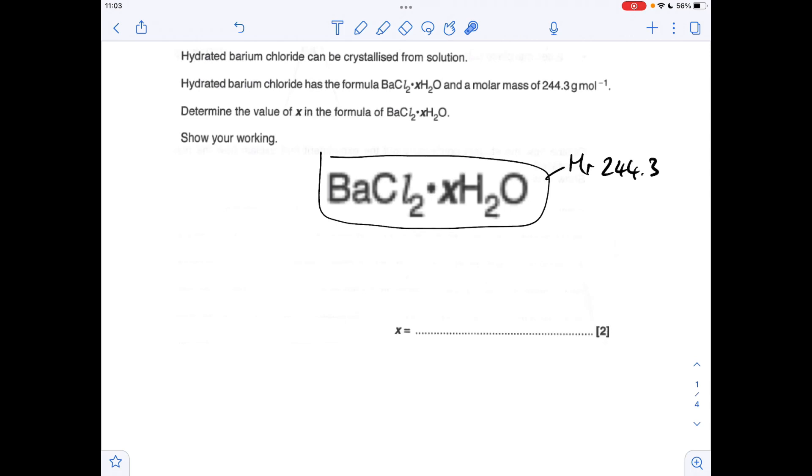And the next part, so we're told the MR of the hydrated barium chloride is 244.3. We've got to work out the value of X. Well, we do know this part of the formula, so BaCl2, that's got an MR of 208.3. So the remainder must be the waters, so that's coming out at 36. So how many waters is that? Well, if we divide that by 18, we get 2. So X is 2.